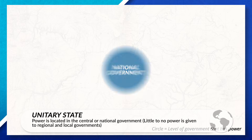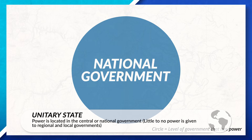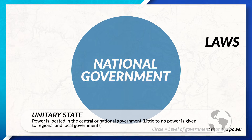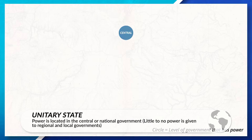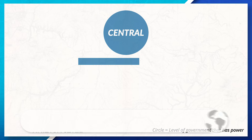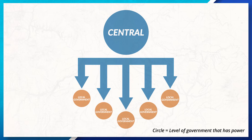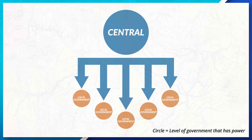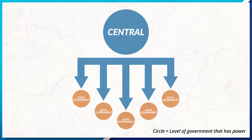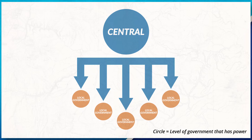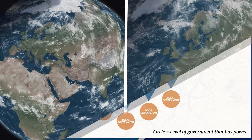States that have their power concentrated with the national government are called a unitary state. The national government here creates the laws, policies, and systems for the entire state. Regional governments take on the role of carrying out policies that are created at the national level and have little to no power or influence over the decision-making process.